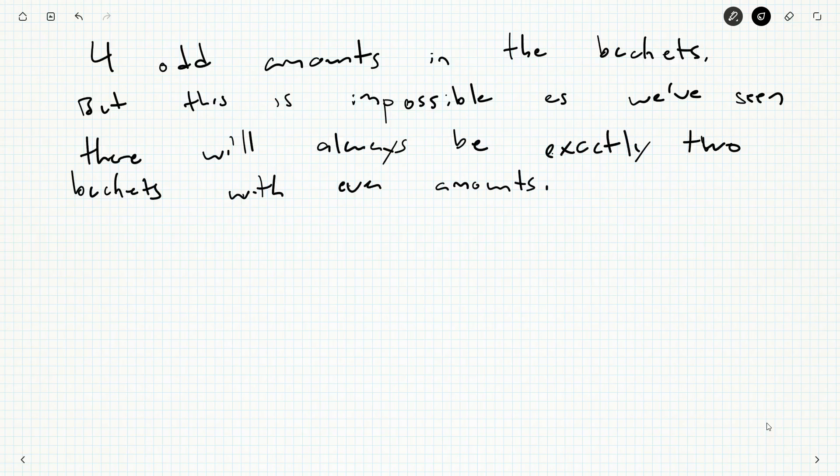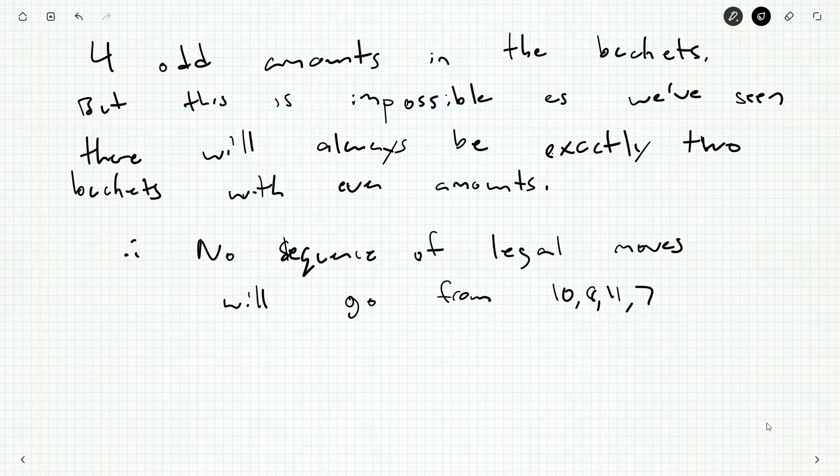So we know it's impossible to get all four odd. And therefore, you can't get 9, 9, 9, 9. So no sequence of legal moves will go from 10, 8, 11, and 7 to 9, 9, 9, 9.